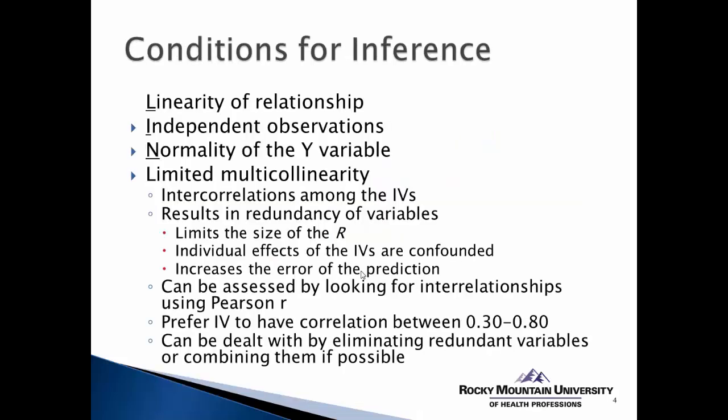There are conditions or assumptions when we do multiple linear regression, just as with regular linear regression. One of the first is that the relationship between each x variable and the y variable should be linear — if there's no relationship, x can't predict y. We can determine that by looking at scatter plots of each x variable with the y variable, and also by looking at the Pearson R value between them.